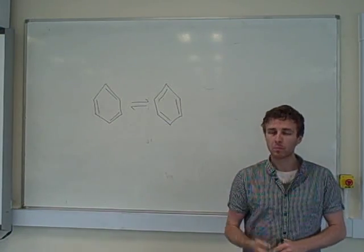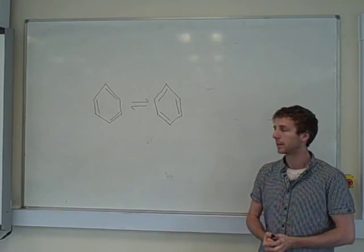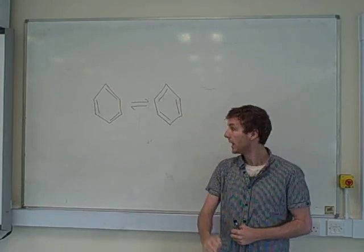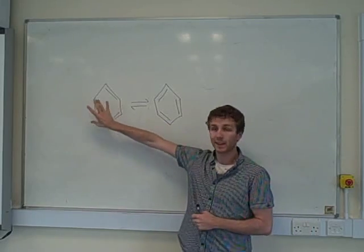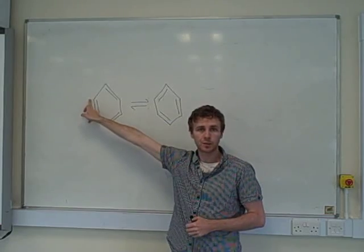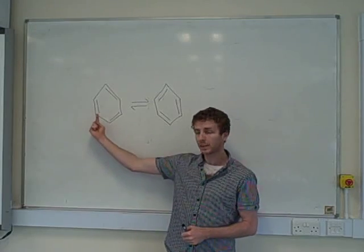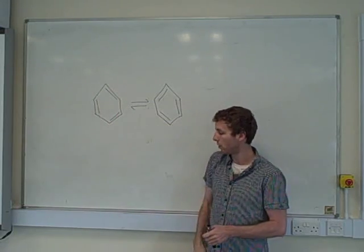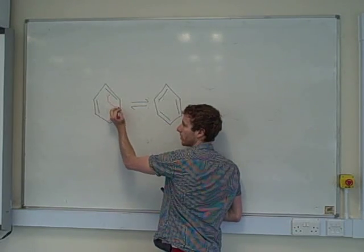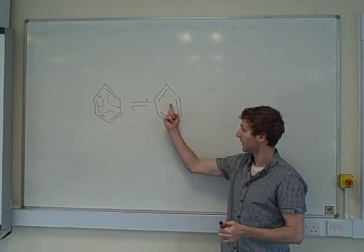So Kekule, a guy with an awesome beard, lived about 150, 200 years ago. He came up with this resonance model for benzene. Resonance just means when something flicks between two different states. And he thought that benzene looked like this. So it's a six carbon ring, each carbon will have one hydrogen, so the molecular formula will be C6H6, and we've got alternating single and double bonds. And he thought that the double bonds could kind of spin around. So this double bond would go there, that double bond would go there, and that double bond would go there, to make this structure here.